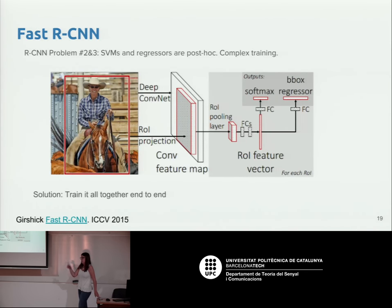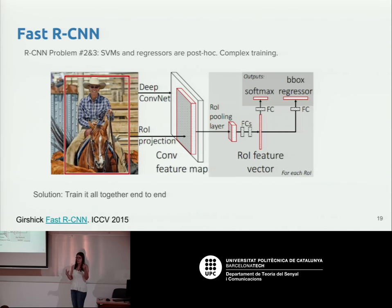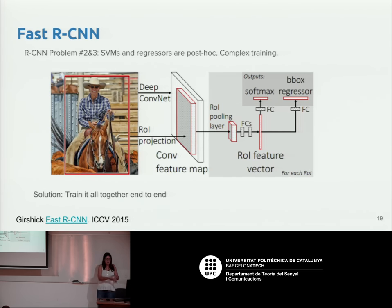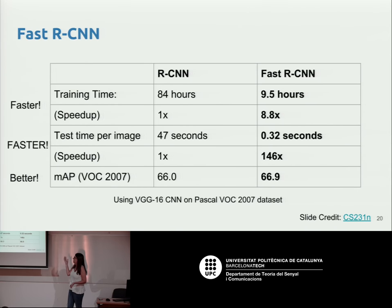The other improvement was removing the support vector machine stage and replacing it with multi-layer perceptrons for classification, along with a bounding box regressor that refines the proposal coordinates to better fit the object. This allows training everything together end-to-end, so the CNN features are learned specifically for the object detection task. The result is called Fast R-CNN and it achieved significant speedups in both training and test time.